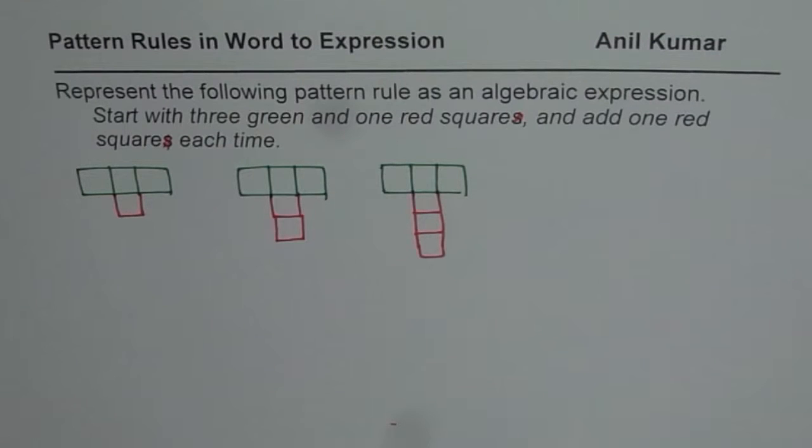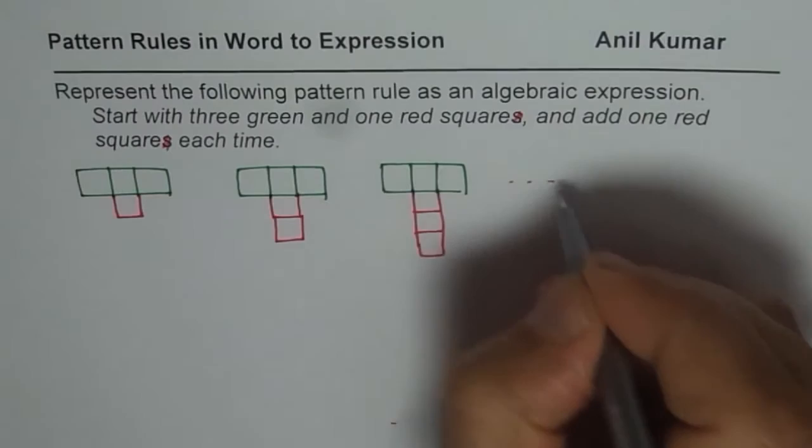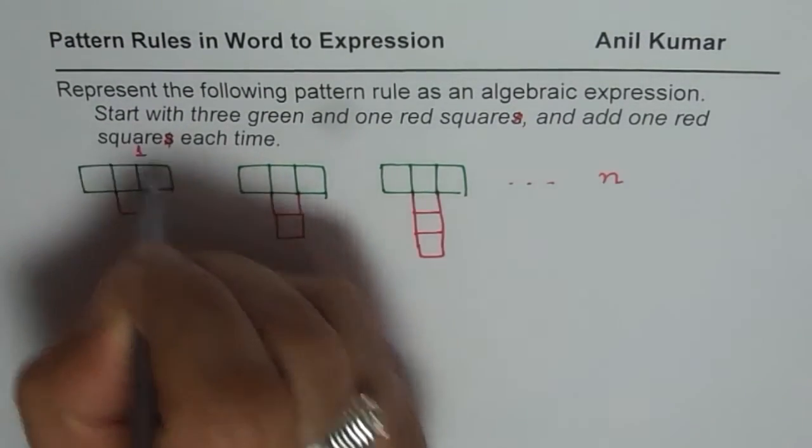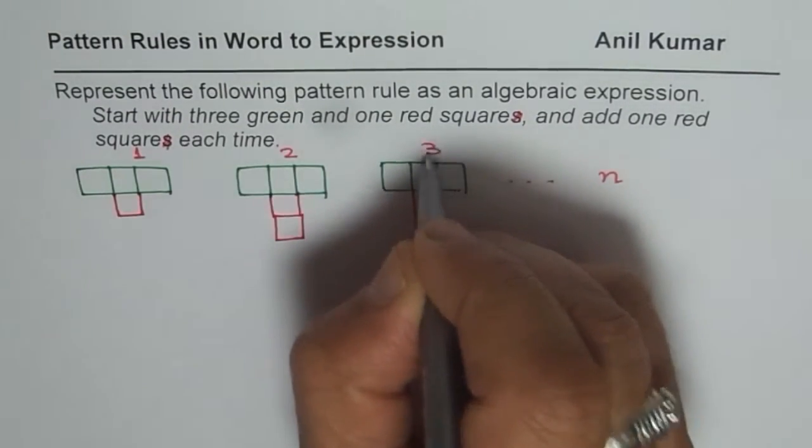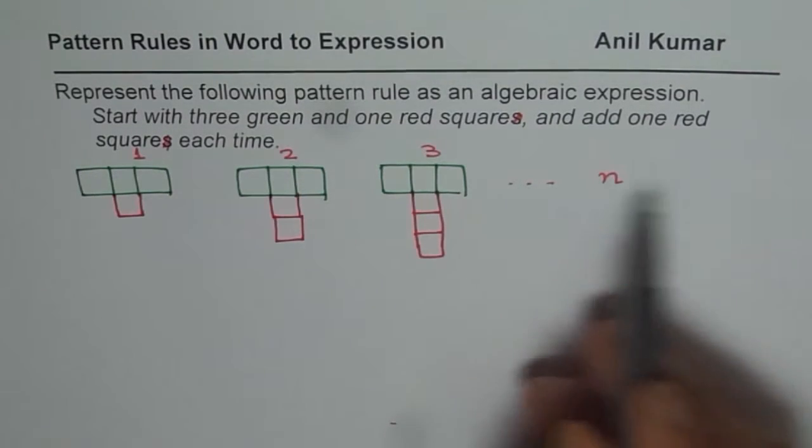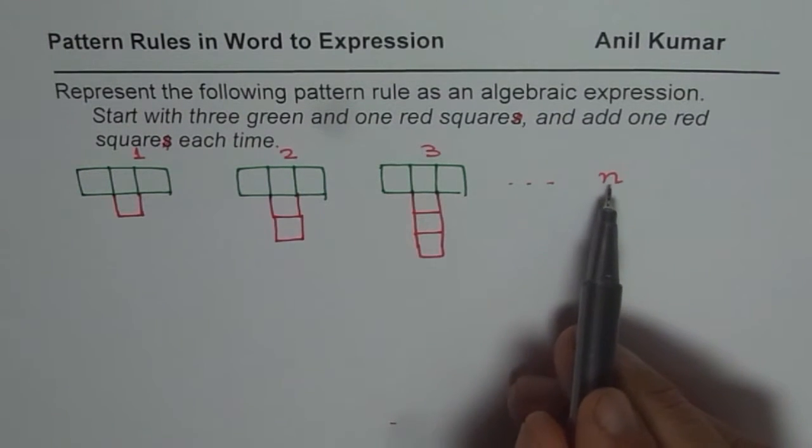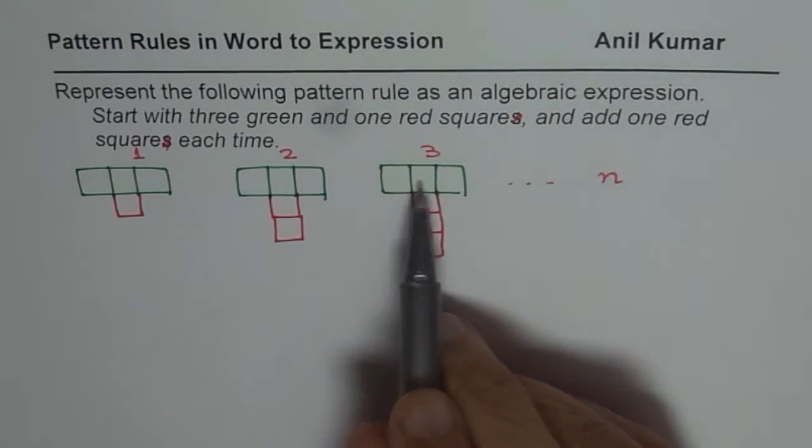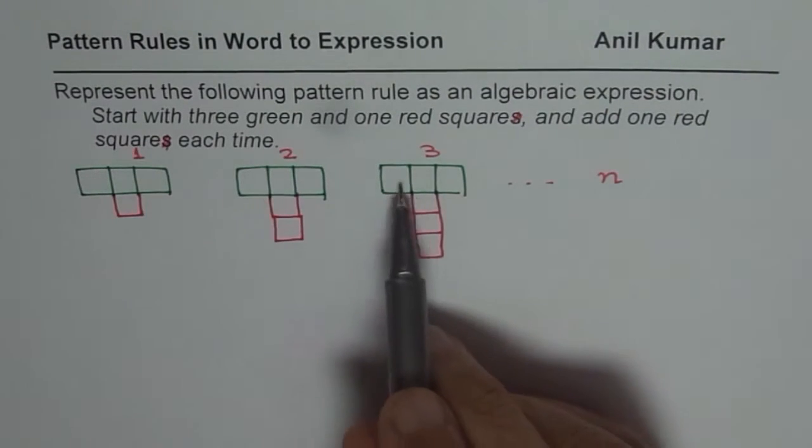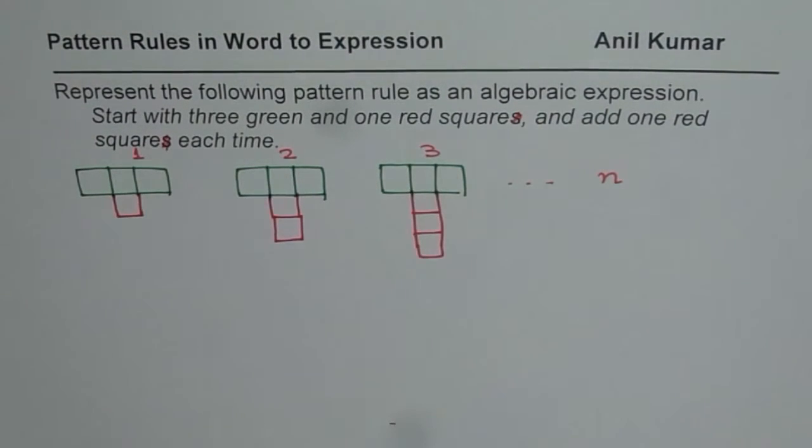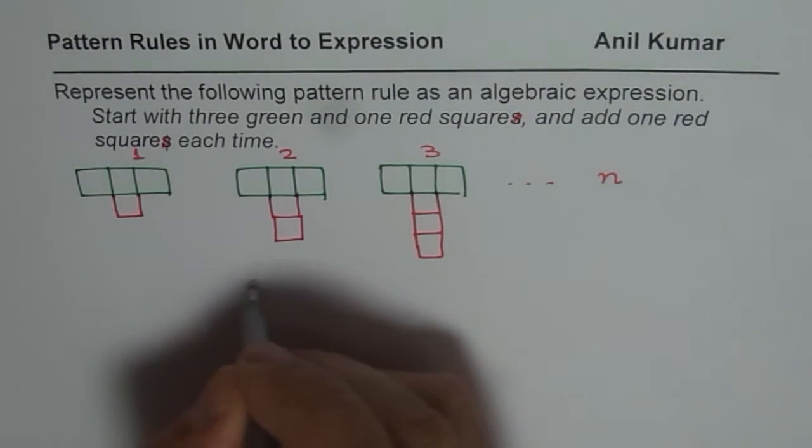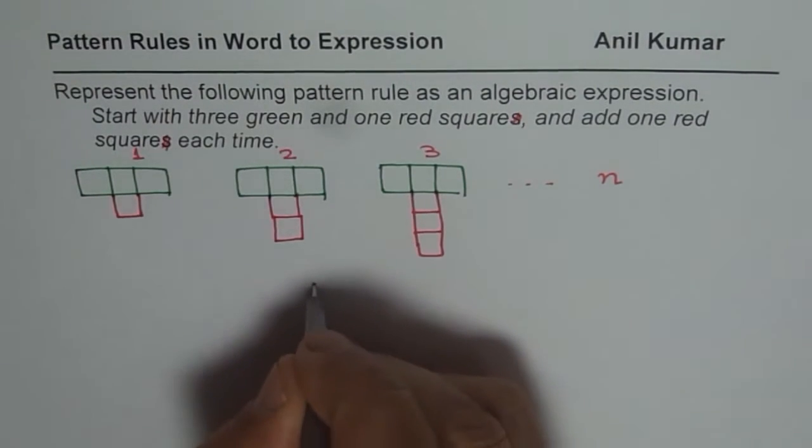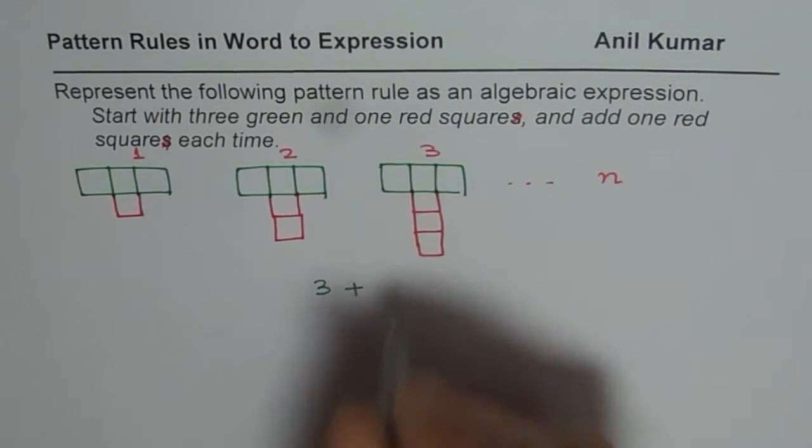Now the question here is how to write this pattern in general form. So like this we can make n. So this is our first pattern, second pattern, third pattern. You can make nth pattern. In the nth pattern, number of green will be fixed, and that is going to be how much? 3.